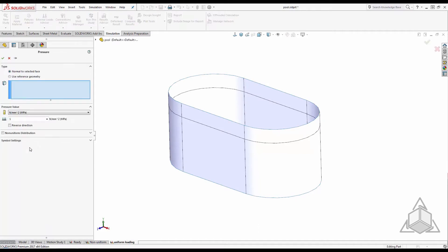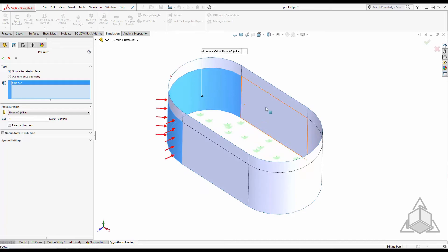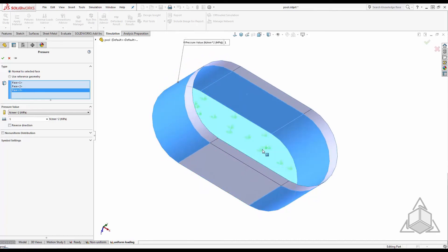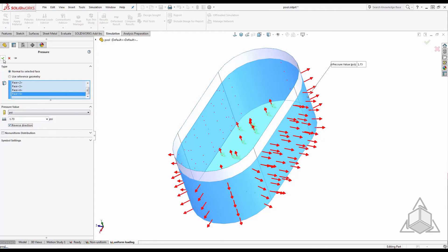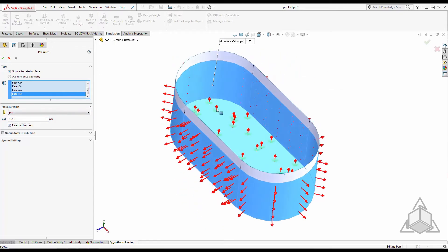I will select all the faces below the waterline and add 1.73 psi pressure to them. The pressure seems to be in the wrong direction on the bottom face. Let's just add that as a separate load.